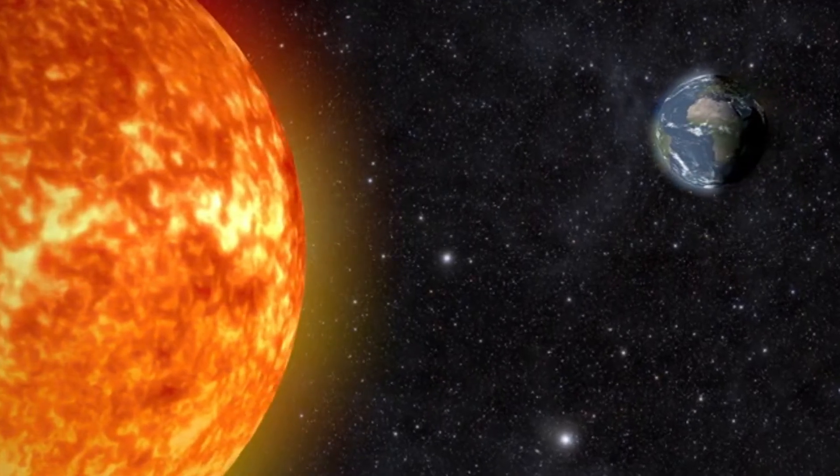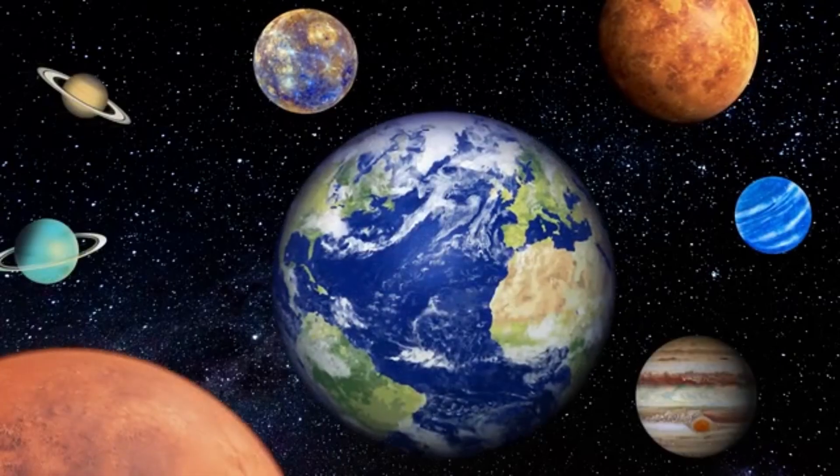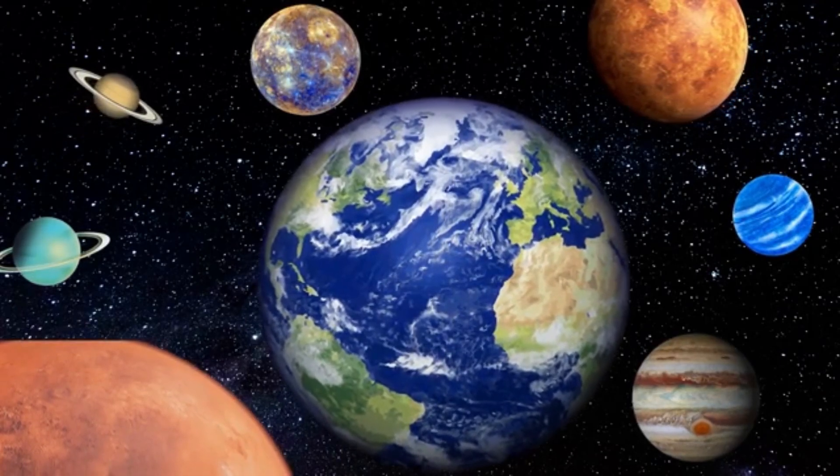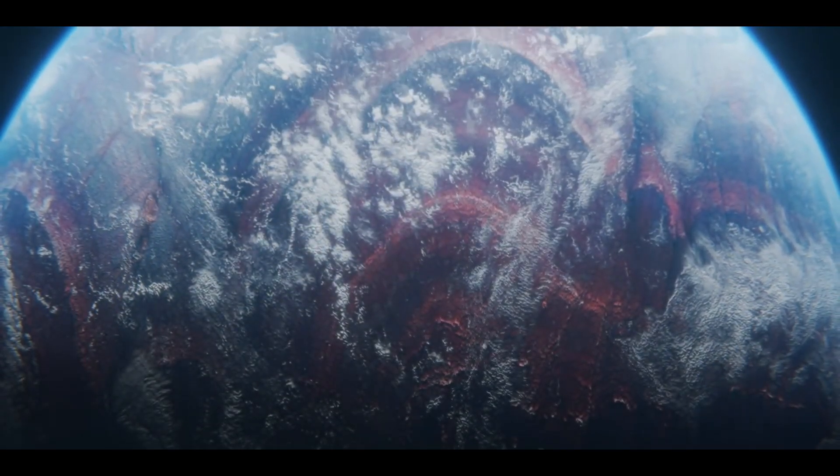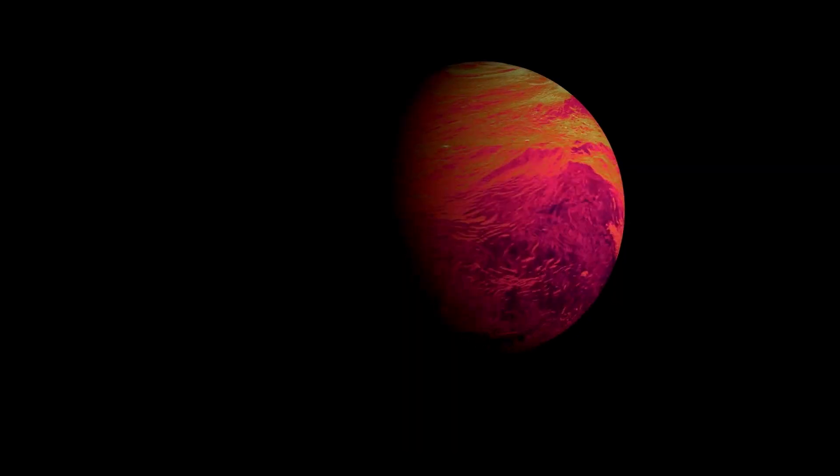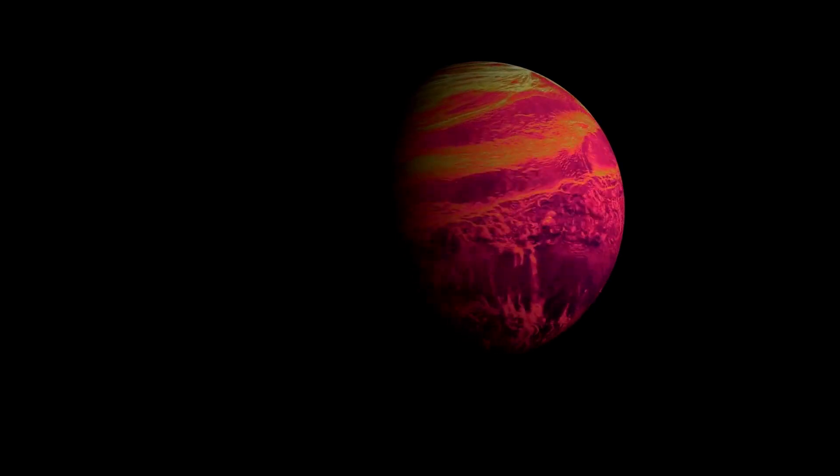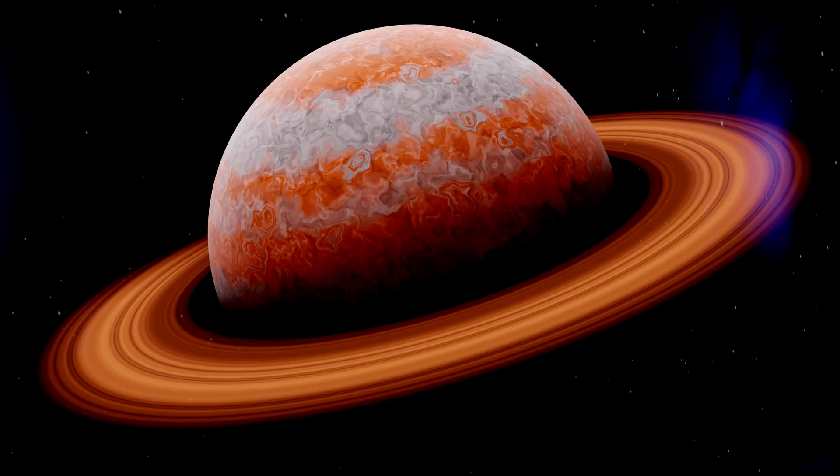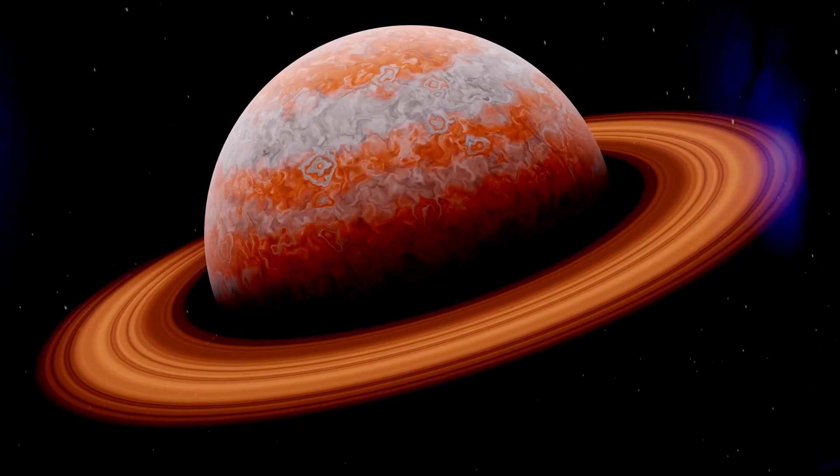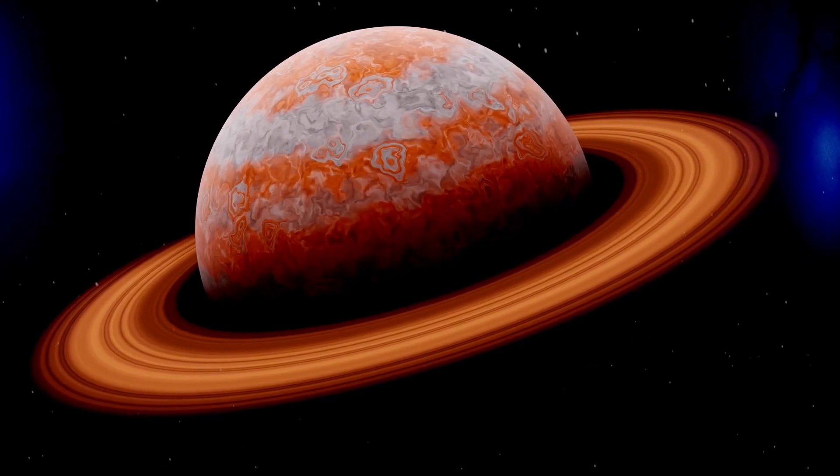During its flyby of Neptune in 1989, Voyager 2 unveiled the planet's great dark spot, a massive storm system, along with the discovery of a faint ring system. The spacecraft also made noteworthy observations of the heliosphere, the vast bubble of charged particles emitted by the sun that envelopes the solar system. Voyager 1's journey into interstellar space provided the first direct measurements of the interstellar medium, the matter that exists between stars. This data has been essential in studying the boundary where the solar wind slows and merges with the interstellar plasma.